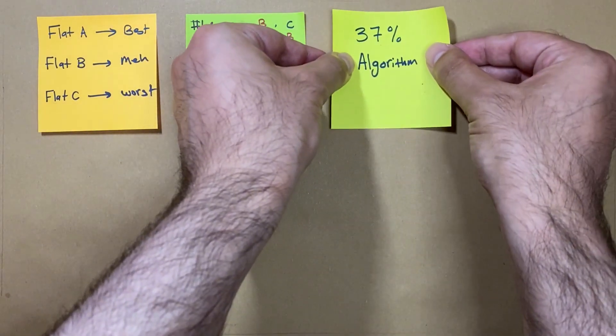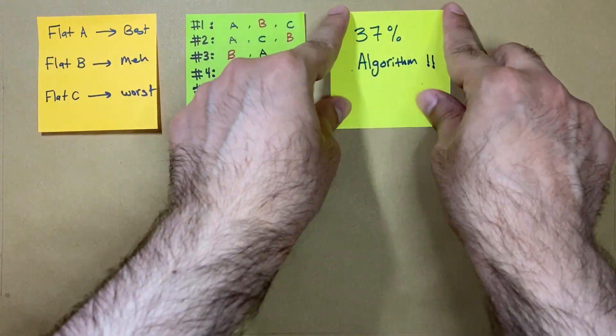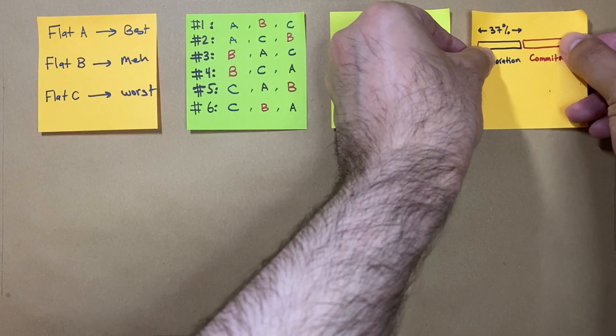Ted goes bananas when he knows the secret gem of decision theory: the 37% algorithm. This smart strategy helps him make informed decisions while exploring such challenging situations.